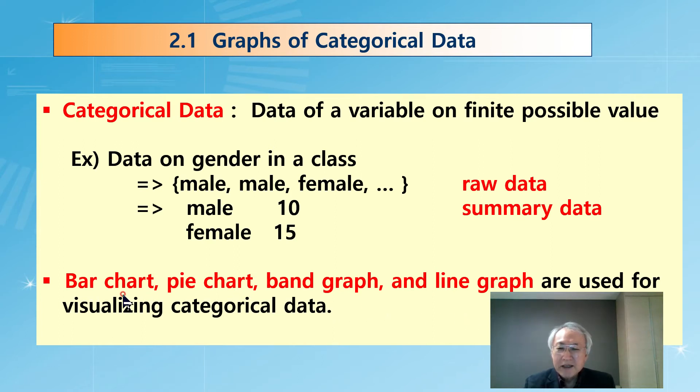You'd better keep in mind that there are roughly four kinds of graphs. We call bar chart, pie chart, band graph, and line graph to visualize categorical data.